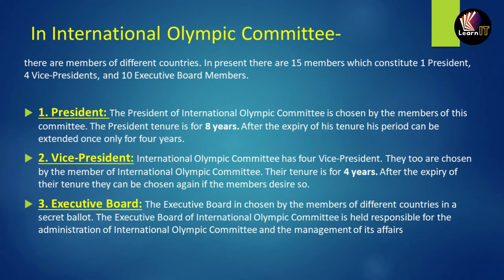The second point is the vice president. The IOC has four vice presidents. They are chosen by the members of the International Olympic Committee, and their timeline is for four years. After the expiry, their tenure can be renewed if the member desires so.